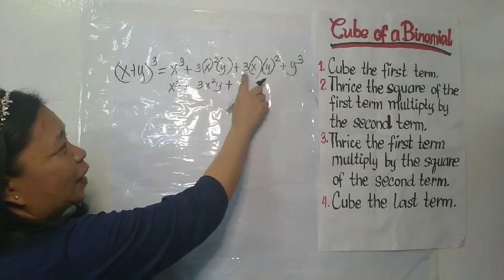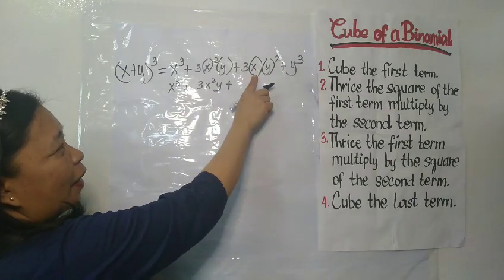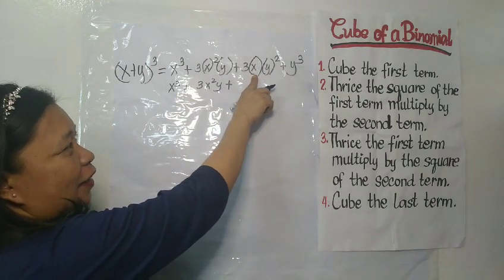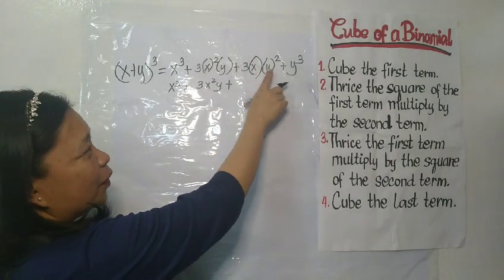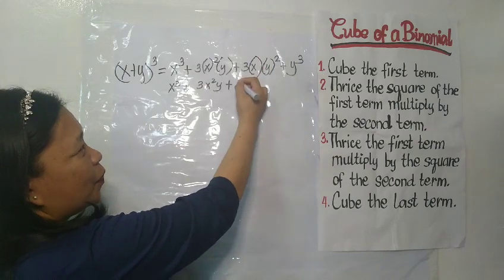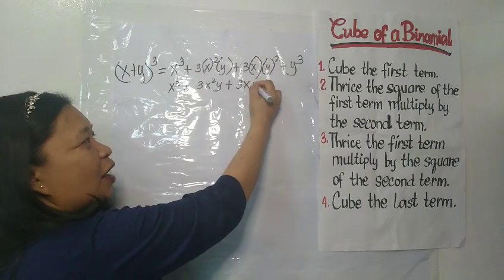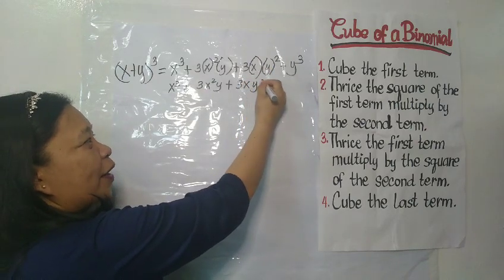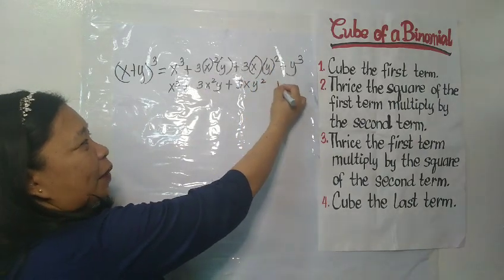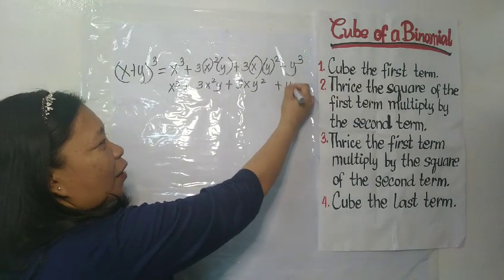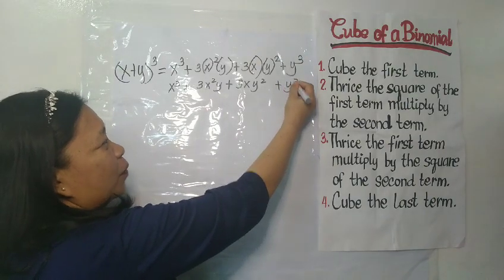Plus 3 multiplied by x, which is 3x multiplied by y squared, giving us 3xy². Plus bring down y cubed. So this is the answer: x³ + 3x²y + 3xy² + y³.